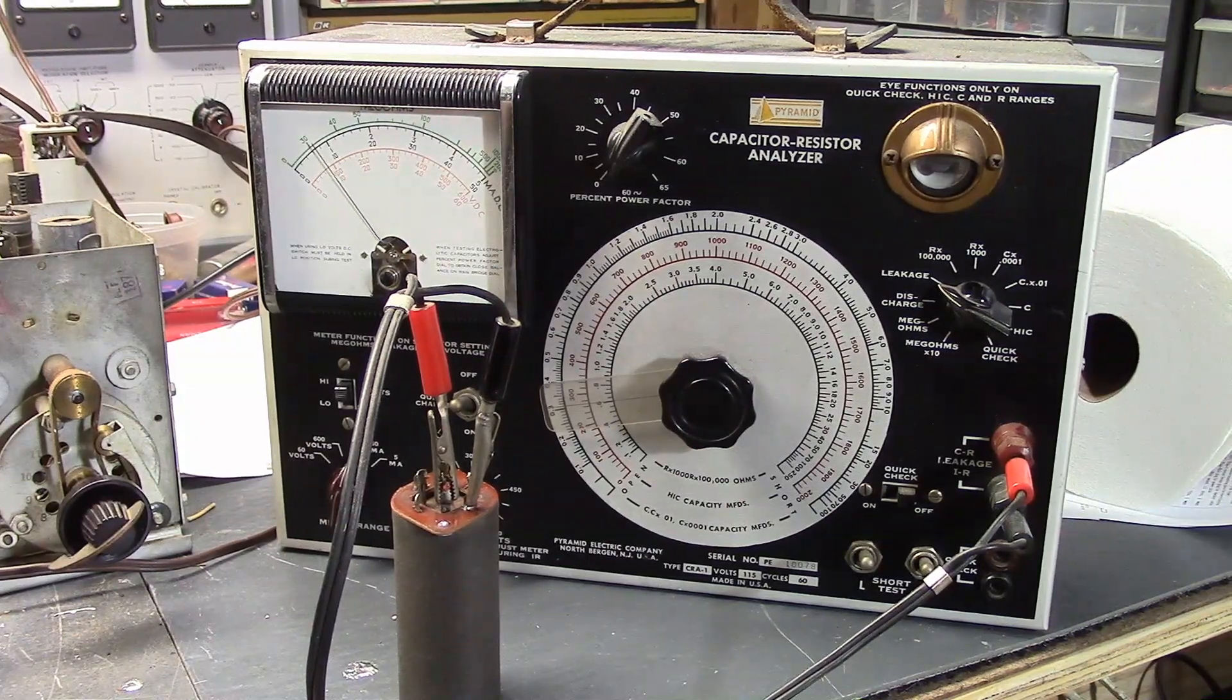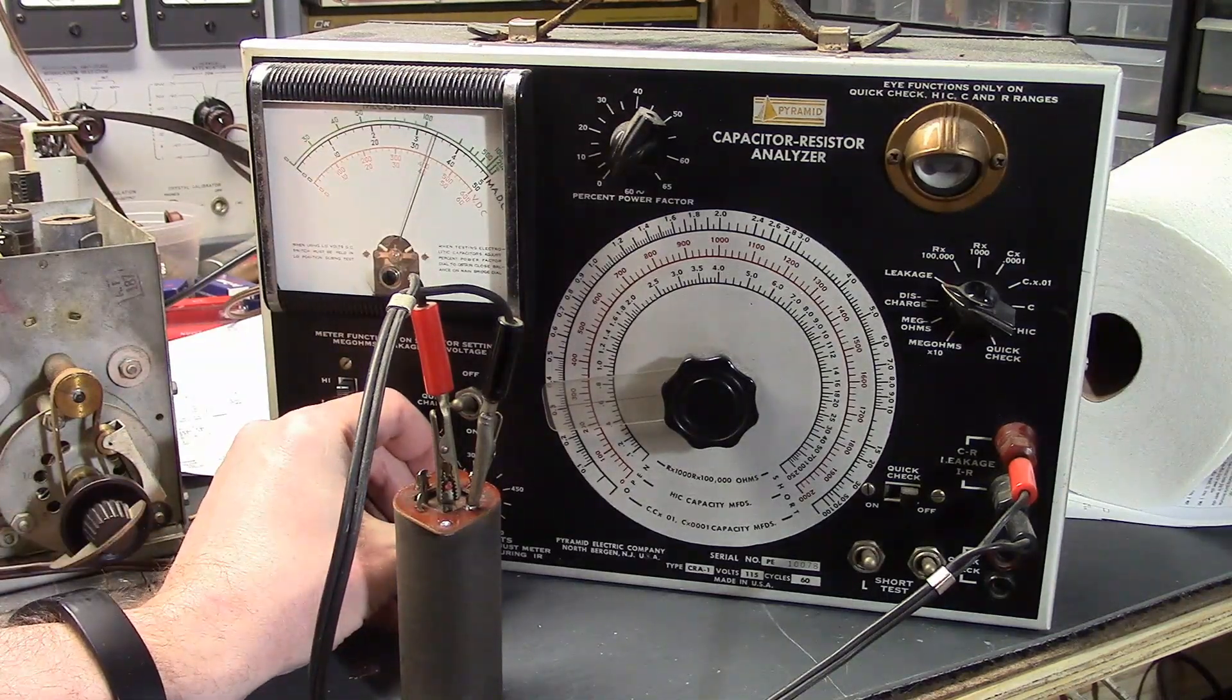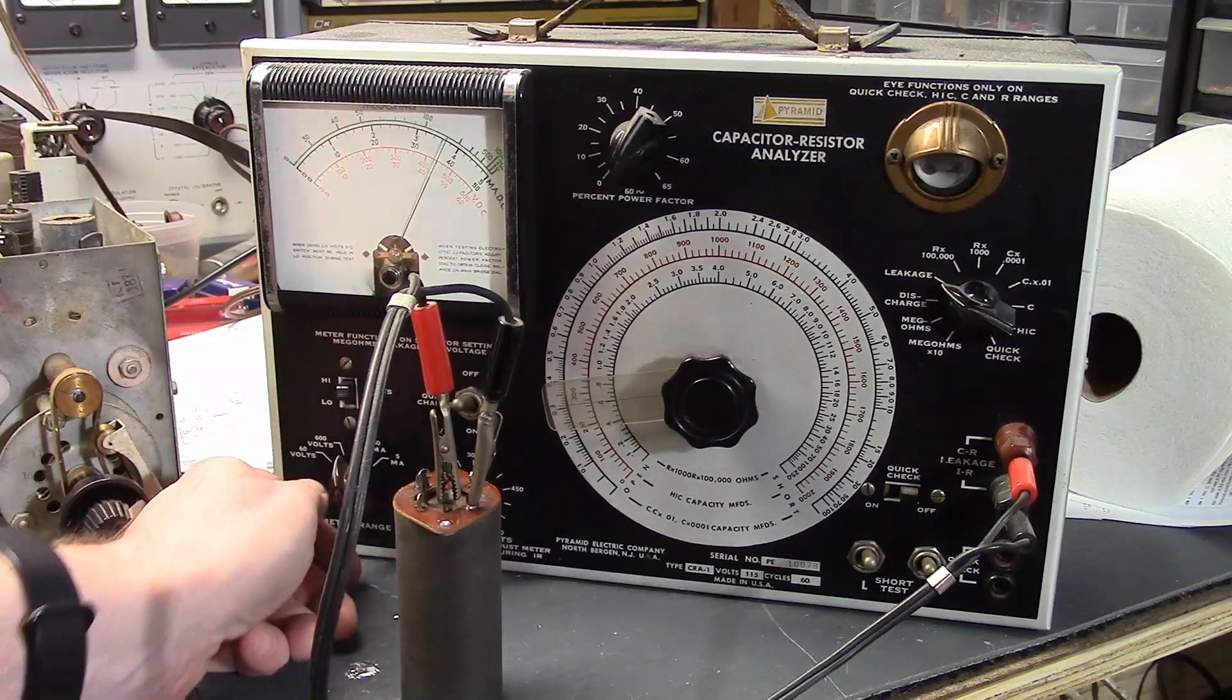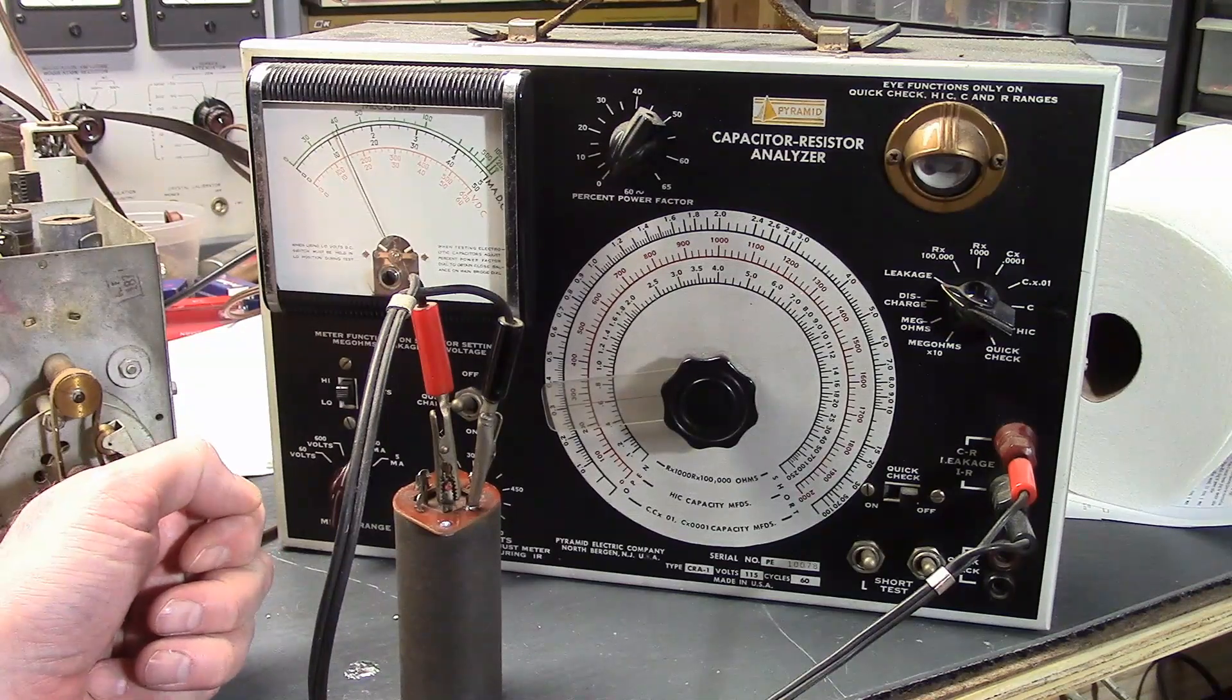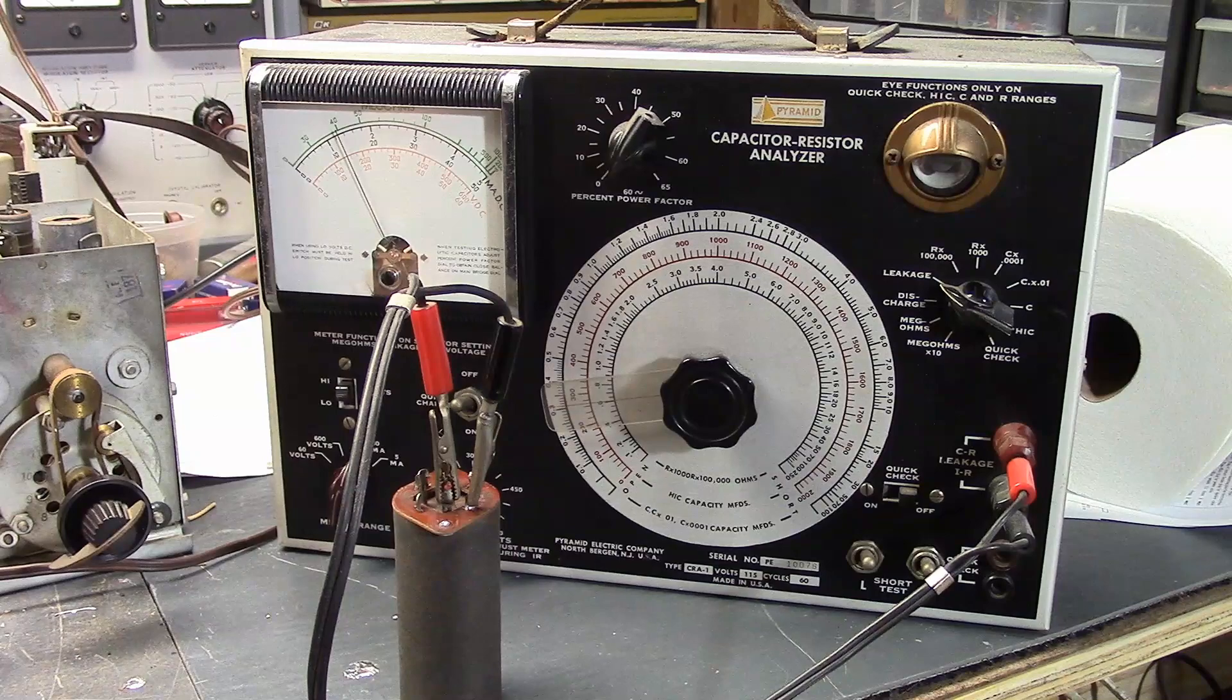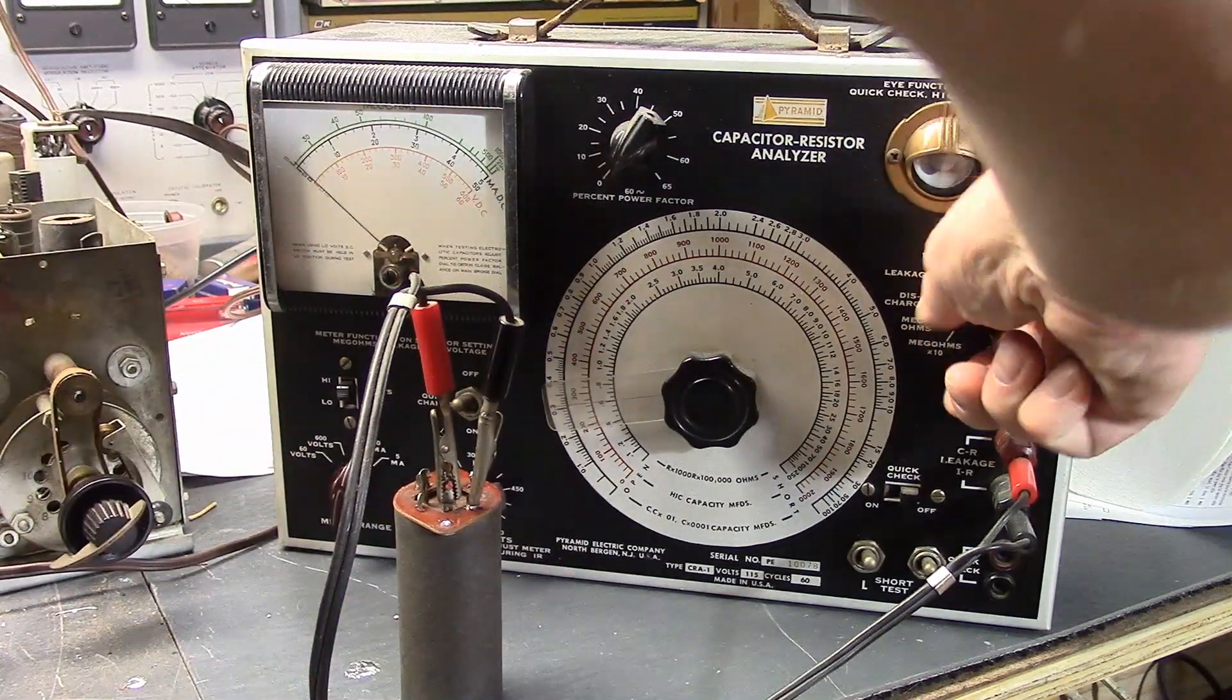Here, I'll hook up a modern one to give you some idea, but before we do that, let's just go all the way to 450. And we are at over 13 milliamps of leakage. All right, let's turn this down, discharge.